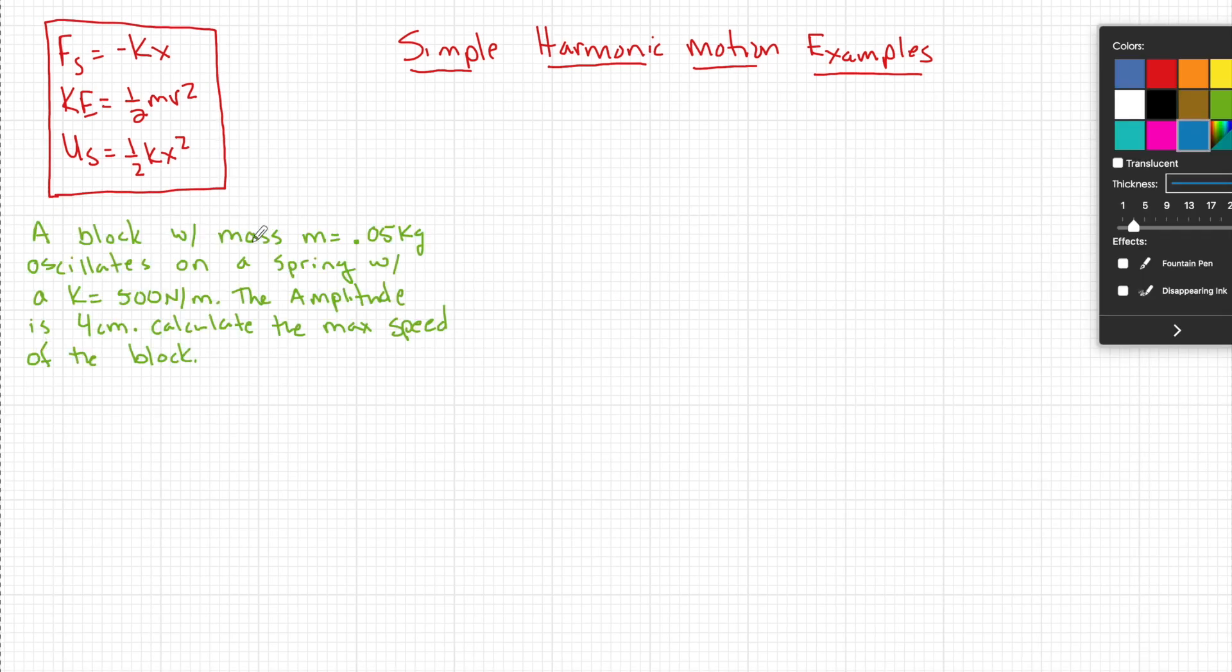So in this example, a block with a mass of m equals 0.05 kilograms oscillates on a spring with a spring constant K of 500 newtons per meter. The amplitude is four centimeters and I want to calculate the max speed of the block. So essentially what's happening is we have some sort of block that's on a surface and there's a spring attached to it and it's oscillating back and forth in this region of oscillation with an A that's equal to four centimeters.